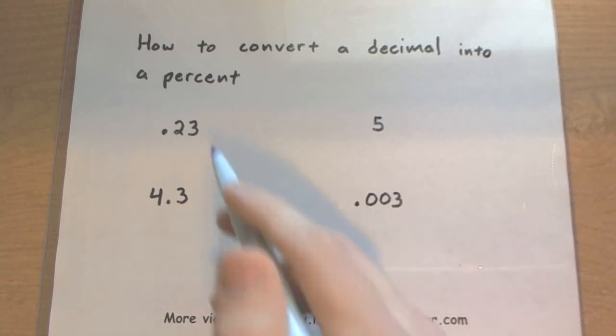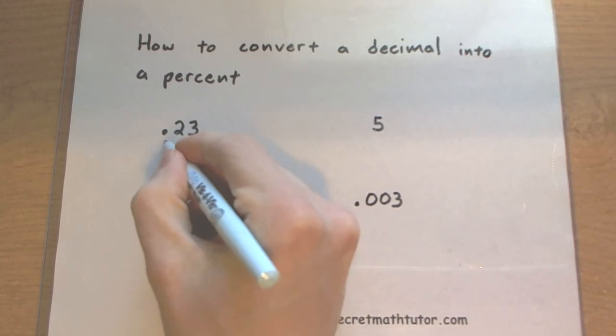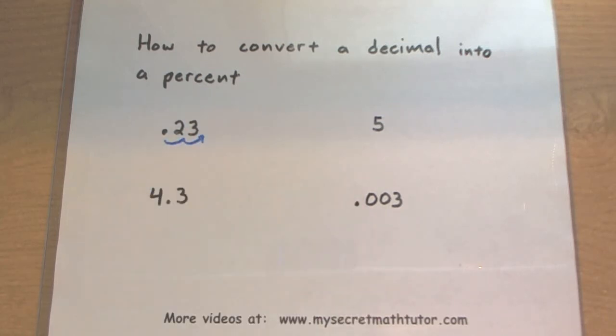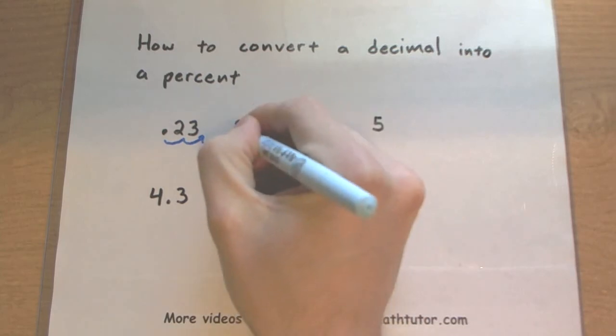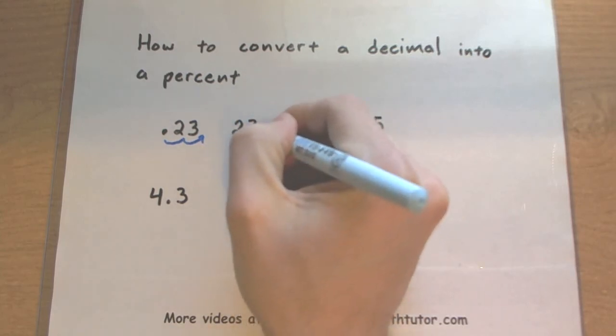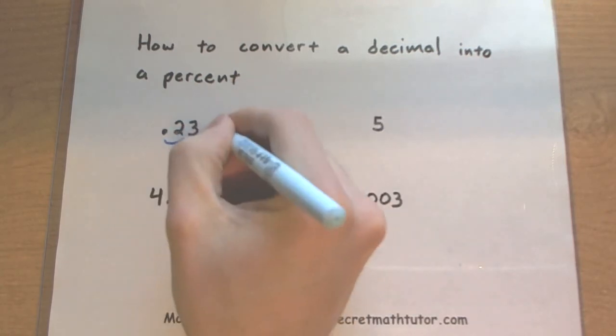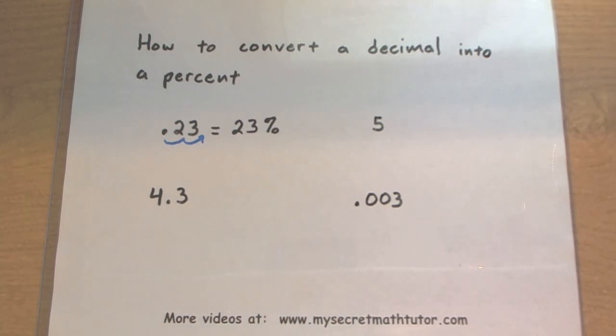The basic idea is that we take our decimal point, move it to the right two spots, and then write the number again with the decimal in a new spot, right behind that three, and put our percent sign on there. So 0.23 is equal to 23%.